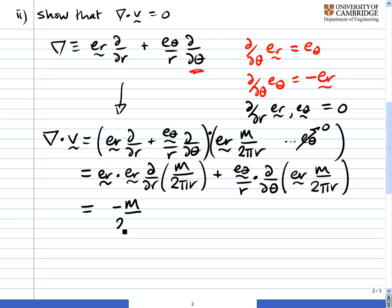The second expression needs a little bit more care, so we'll spend some more time on it. And we've got e_theta still over r dotted with whatever comes out of this bracket here. Now, m over 2πr isn't a function of theta, so that can come out.